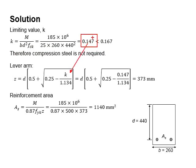You will obtain the lever arm z equals 373 mm. The value 373 mm is actually equivalent to about 0.85 times d. It is less than the limit of 0.95 times d, therefore you may use the value 373 mm directly.